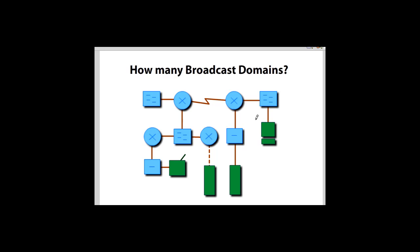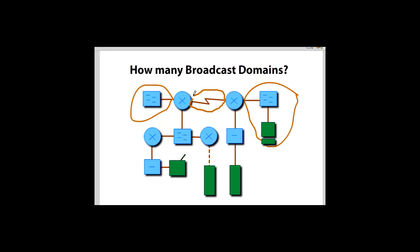We just count the networks. This router has an interface connected to a switch connected to a client — we draw a circle and call that one network, one broadcast domain. This router has an interface connected to a switch with no visible clients — that's still a network. In between the two routers we've got a network. That's three networks. And over here, this router is connected to a hub connected to a server — that's a fourth broadcast domain.